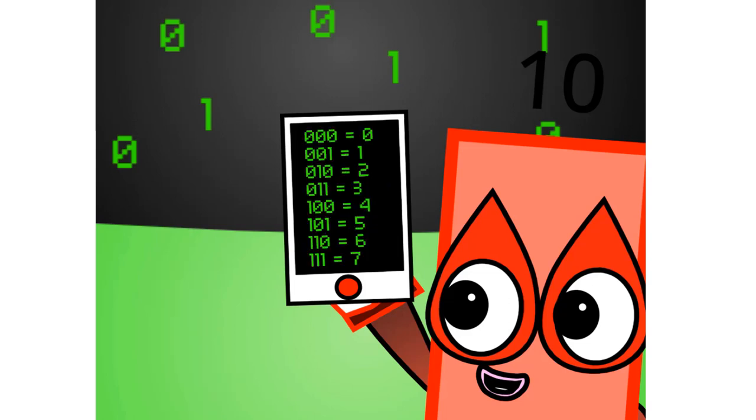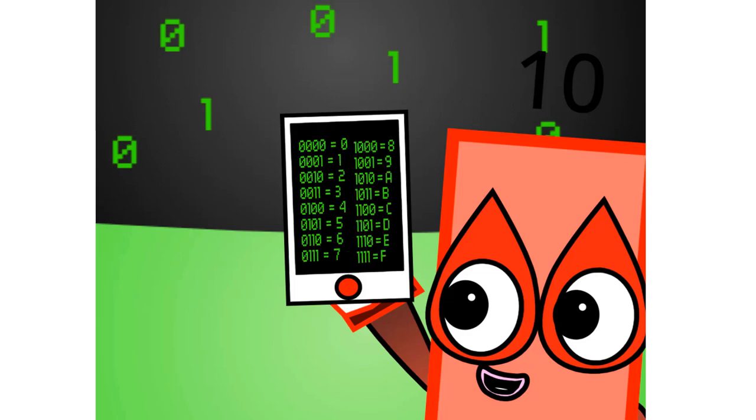There are eight different combinations of three-digit numbers in binary. This means that binary can easily be coded into octal. There are also 16 different combinations of four-digit numbers in binary. This means that binary can easily be coded into hexadecimal too.